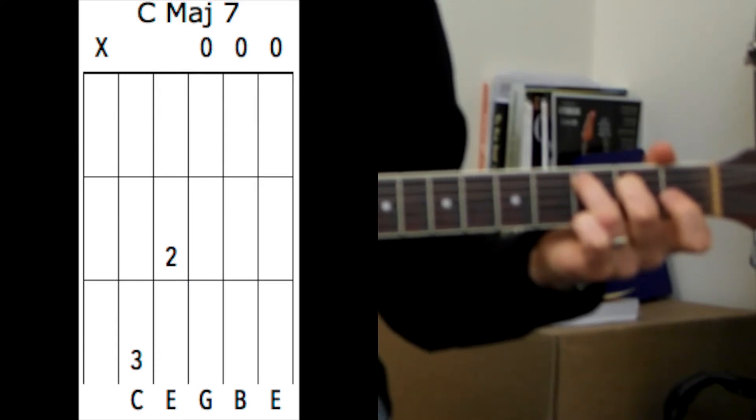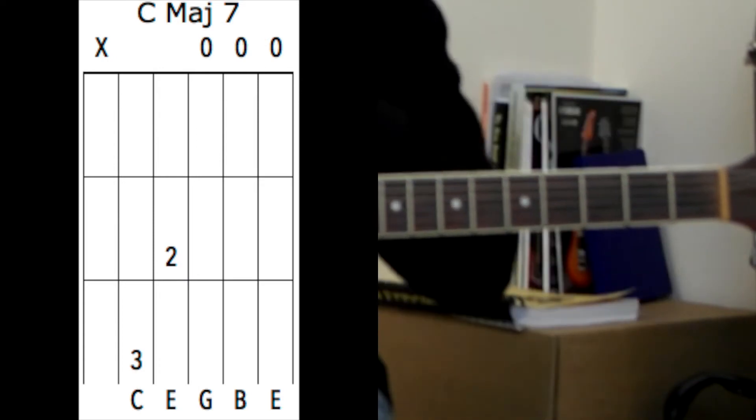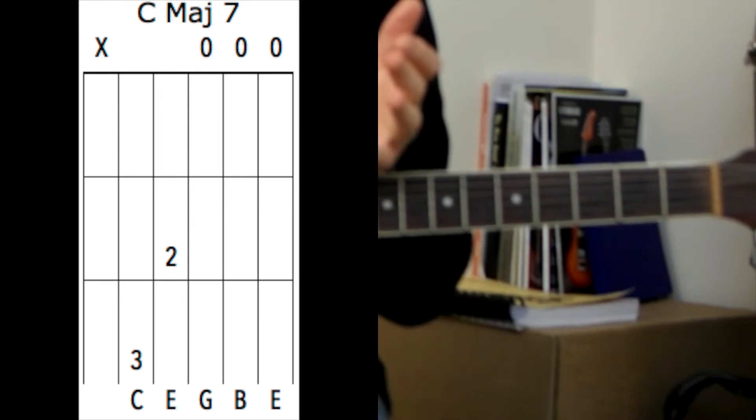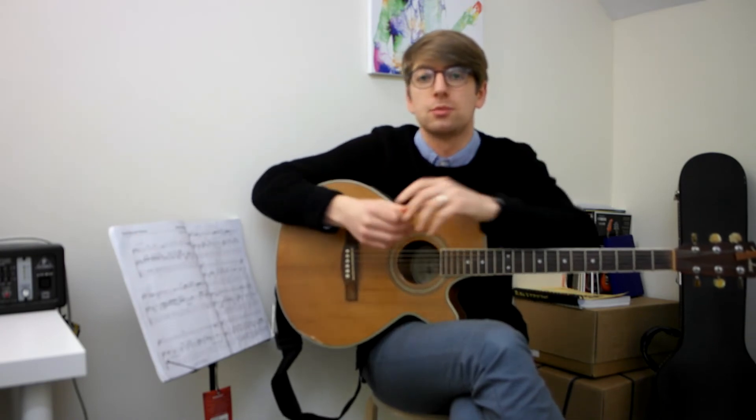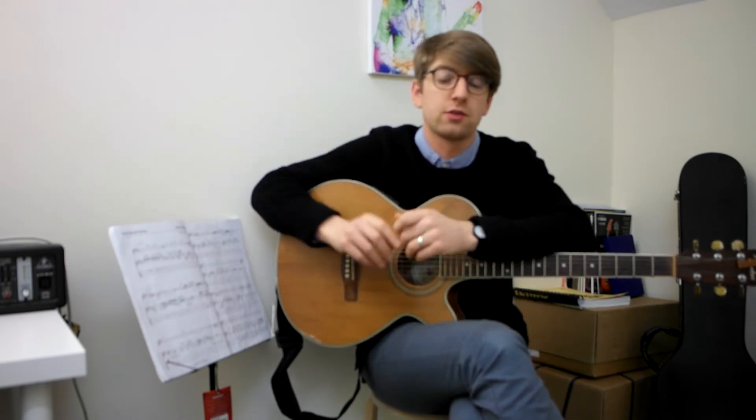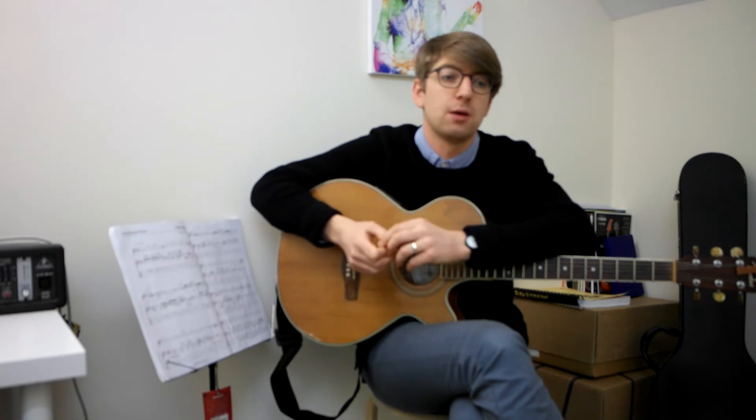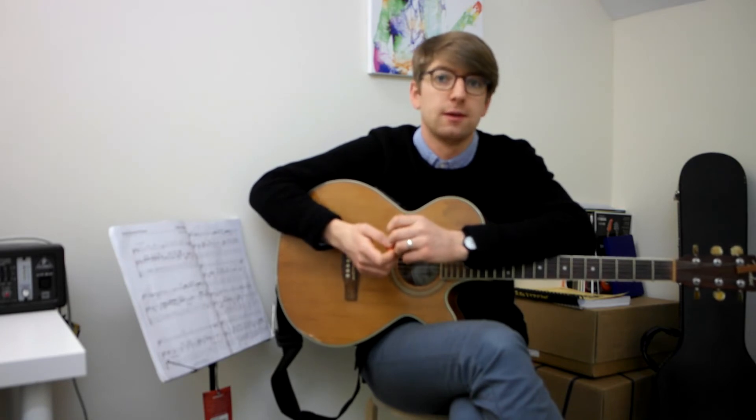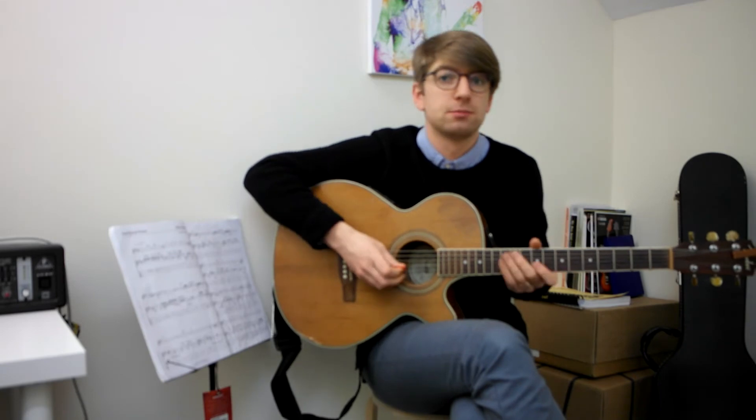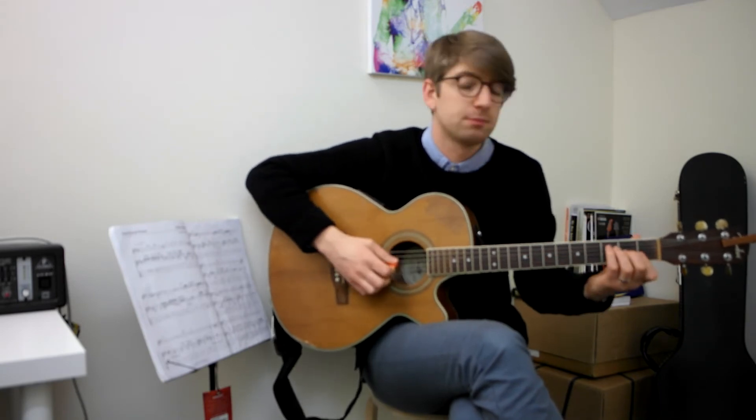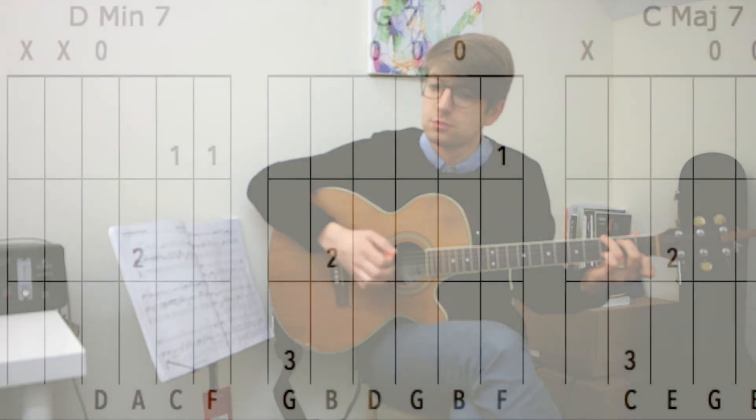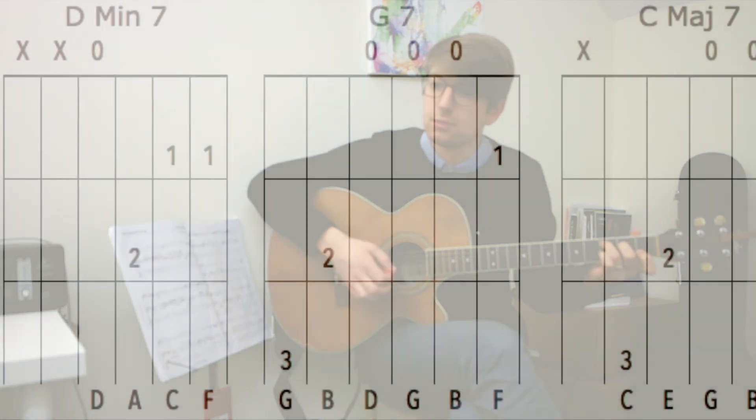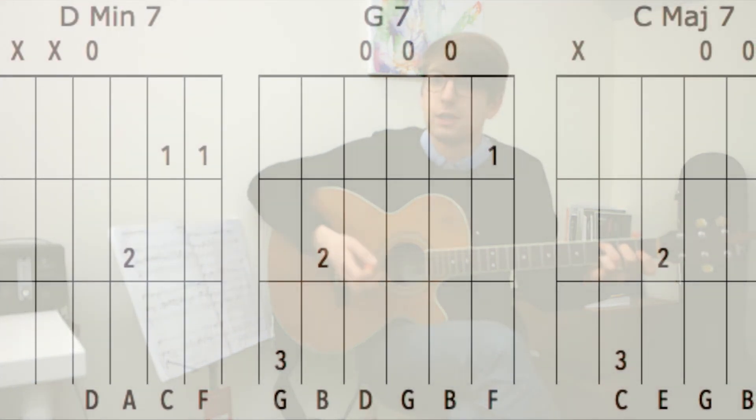So you get this really nice jazzy feel, and all you've done is worked out the scale. So we're doing the C, you've then taken the 7th chords of the 2nd, the 5th, and the 1st of this C major chord scale. And then you just have to add a little bit of rhythm. So let's just add a basic jazz rhythm. It might sound familiar.